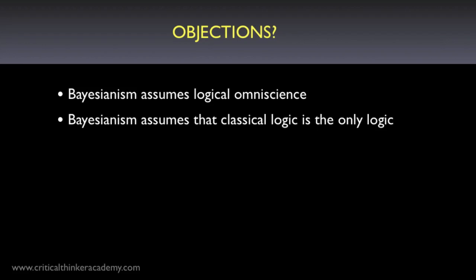Second objection: Bayesianism assumes that classical logic is the only logic. This follows from the bit about logical omniscience. There are non-classical logics — logical theories that use different fundamental rules of inference from standard classical logic. We've largely moved away from the days when everyone thought classical logic was the only possible logic. The objection is that Bayesianism presupposes that the rules of classical logic are correct and makes them immune to revision based on empirical evidence, granting them a kind of a priori status that few people actually think they have anymore.